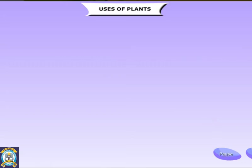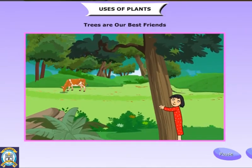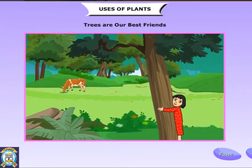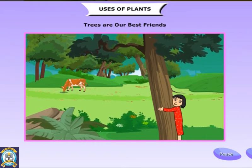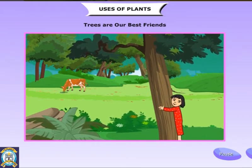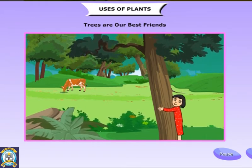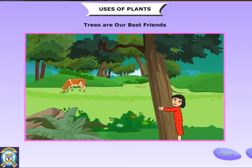Uses of plants. Trees are among our best friends — they help us in many ways. Trees and forests are like the lungs of the earth. They purify the air by taking in carbon dioxide and giving out the oxygen we breathe.